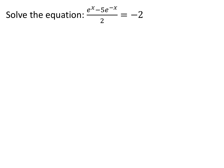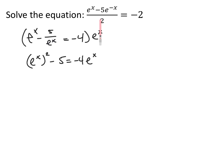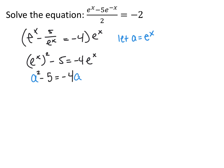On this equation, e to the x minus 5 times e to the negative x over 2 equals negative 2. There's no way to get one exponent equal to another single exponent, so we manipulate it. I multiply both sides by 2 to clear the denominator and rewrite e to the negative x as 5 over e to the x, giving e to the x minus 5 over e to the x equals negative 4. Then I multiply both sides by e to the x, giving (e to the x) squared minus 5 equals negative 4 times e to the x.